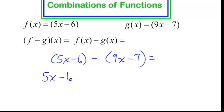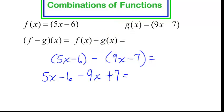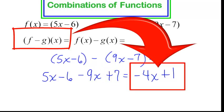It would be 5x minus 6. And yes, I have this negative in front of the parentheses. Change all the signs: that would be minus 9x and a positive 7. Then we add our like terms. 5x and negative 9x is negative 4x. Negative 6 and positive 7 is positive 1. So f(x) minus g(x) equals negative 4x plus 1.